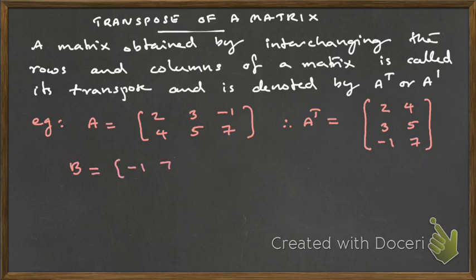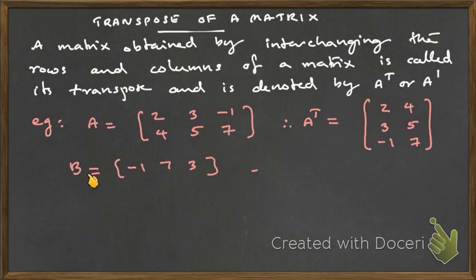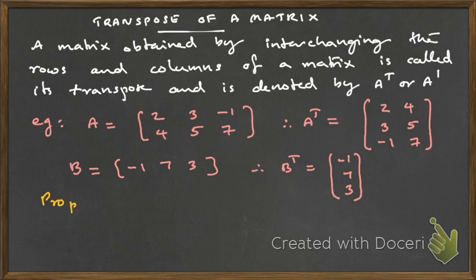One more example. This is a row matrix because it has only one row. When finding its transpose, the row will go as the column. So B transpose would have that single row appearing as a column — there is only one row, and we take it and write as the corresponding column.